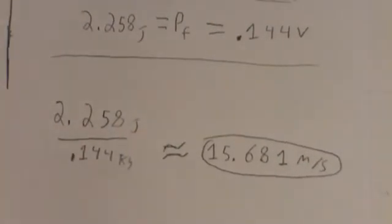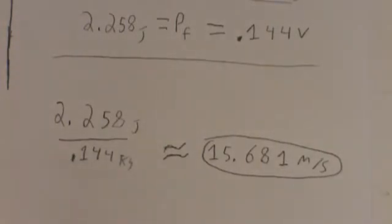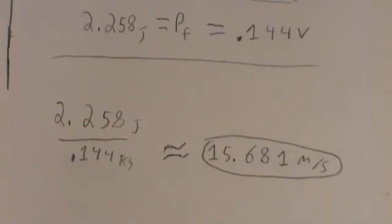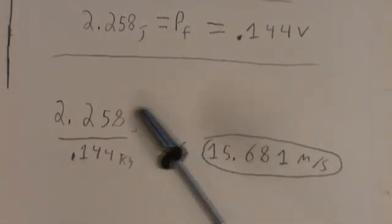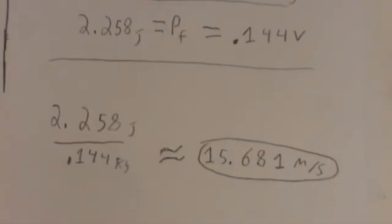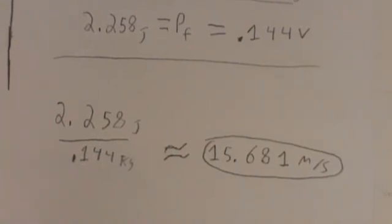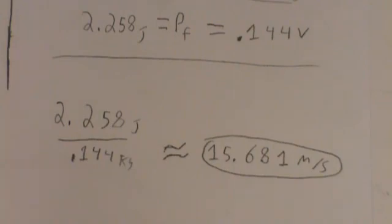In reality, it equaled a much larger decimal — something about 15.680555 and so on — but 15.681 meters per second should suffice. This is how fast the ball was going outward in the field after the batter hit the ball with the bat. And that is how you find that. Thank you.